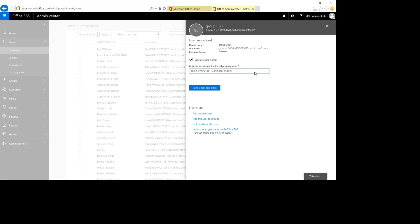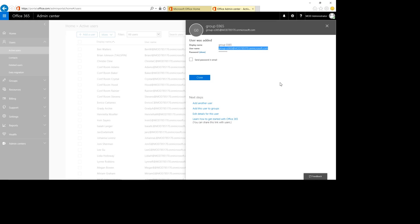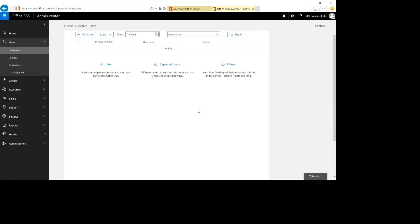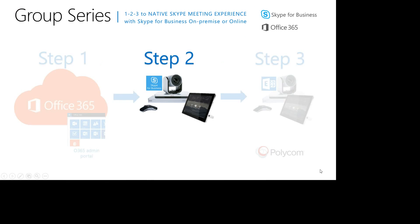All set — we don't need to send the email, so I copy the account details to use later and close. That was step one: we created a user account which automatically created all the needed accounts in Office 365 — Skype for Business, Exchange, and all other features. For the Group Series, we are going to use the Office 365 Skype for Business Online account on the device.